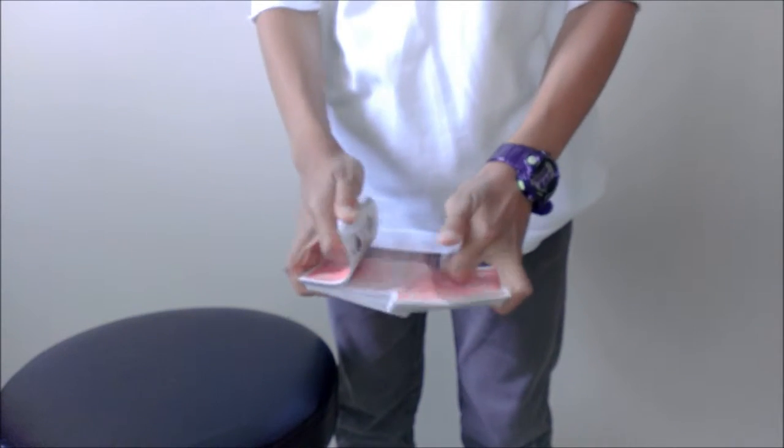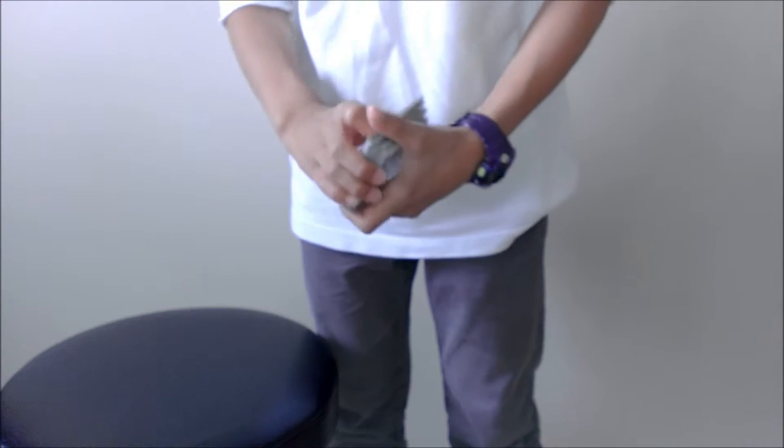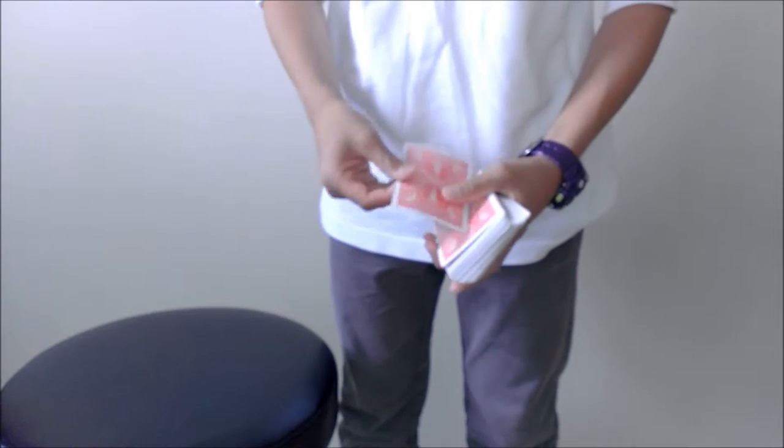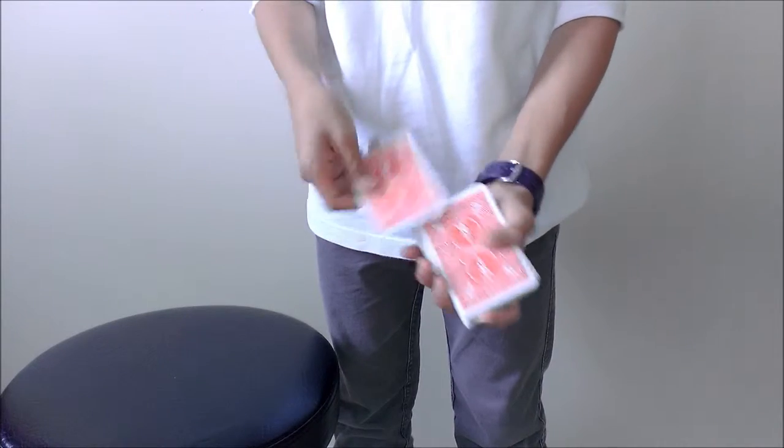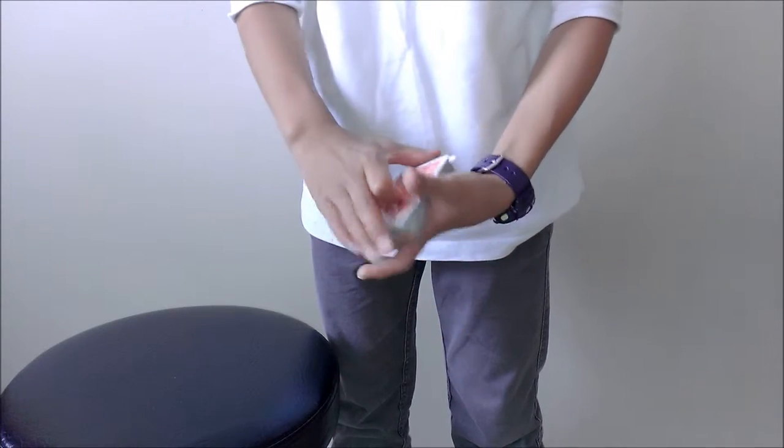So you can start off by giving the cards a shuffle, like so. And you can just take this card, the 6 of Diamonds, and you can place it into the middle.